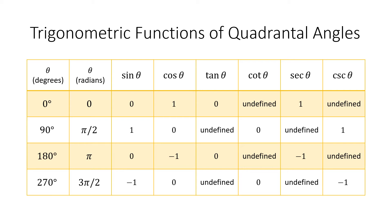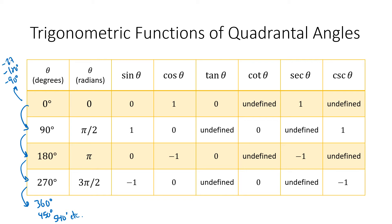It's important to note that the table isn't a complete list of all quadrantal angles. Going up by 90 degrees each time, we could keep going: 360, 450, 540, and so on. We could also go negative: −90, −180, −270, etc. So there are infinitely many quadrantal angles.